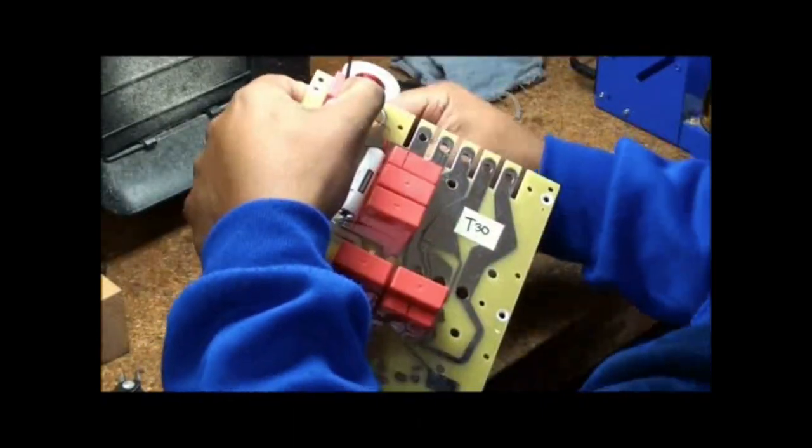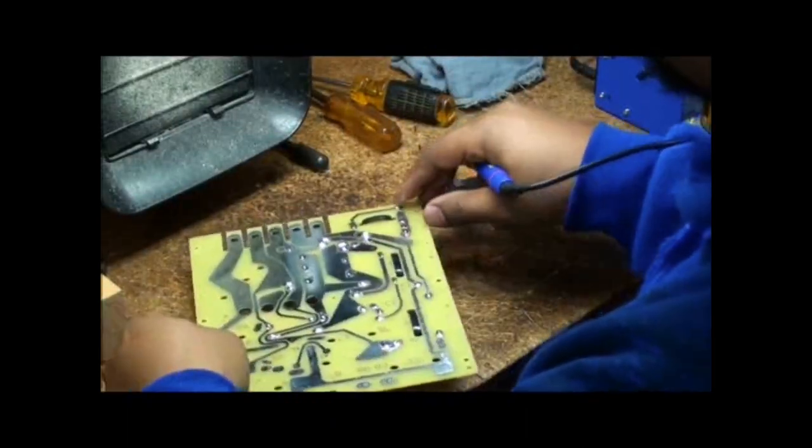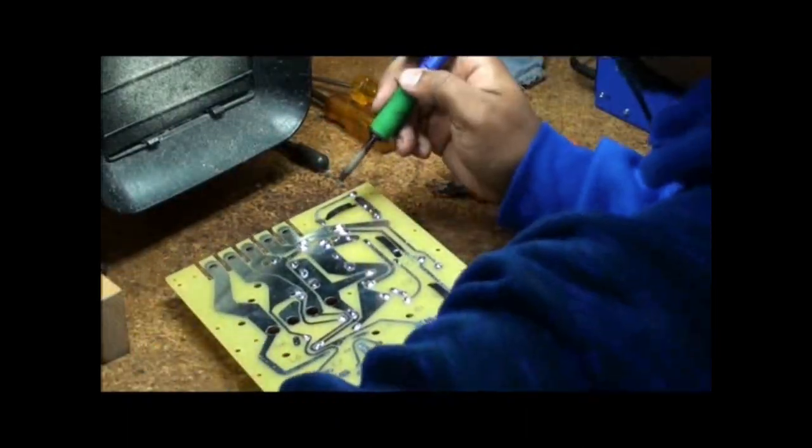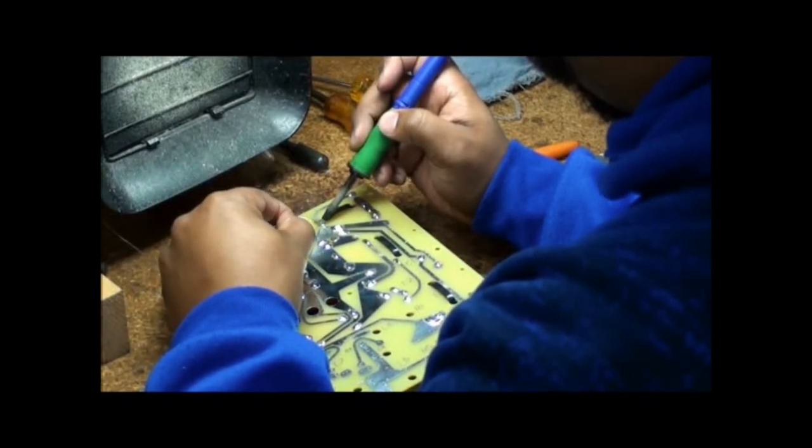Once all the parts are set and soldered into this crossover, it is dipped into a Wonder Dip, which is a conformal coating that reduces microphonics and also protects it from the environment.